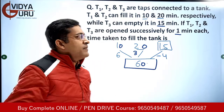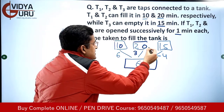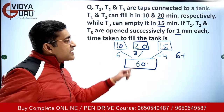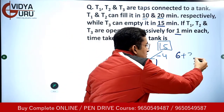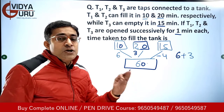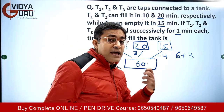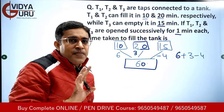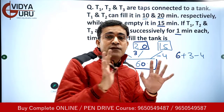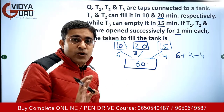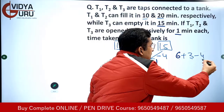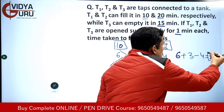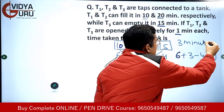They are open successively for one minute, starting with T1. In the first minute T1 does 6 units. In the second minute T2 does 3 units. In the third minute T3 does negative 4 units — that is negative work, draining some water. So the net work done in 3 minutes is 6 + 3 − 4 = 5 units. So 5 units is the net work done in one 3-minute cycle.